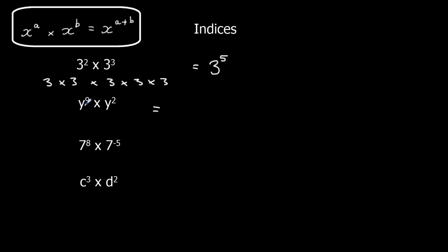Same thing here — as long as the number has the same base, it can be any letter or number; in this instance it's y. So I've got 9 y's multiplied together times another 2 y's multiplied together. That means I've got 11 y's multiplied together because 9 plus 2 makes 11. Following the rule for the next one, we've got 7 to the power of 8 times 7 to the minus 5. The base stays as 7, and then 8 plus minus 5 means 8 minus 5, which is 3.